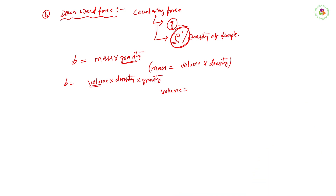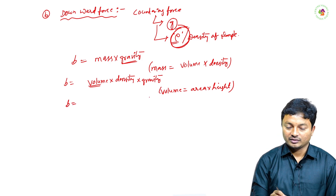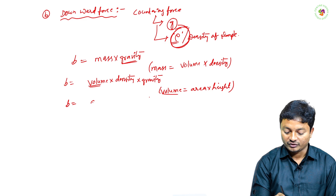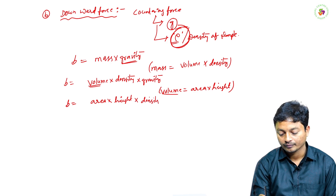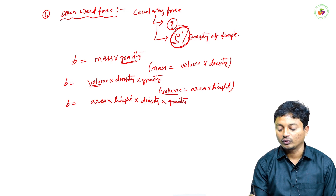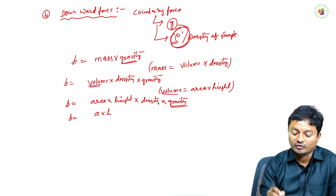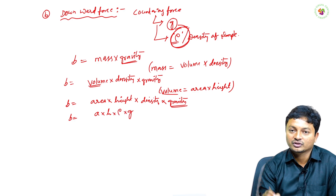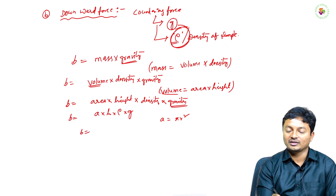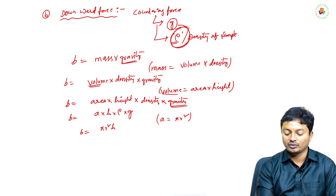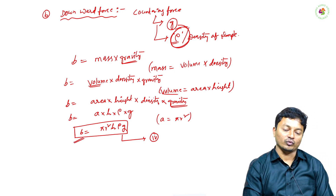The volume can be written as area times height. Substituting: the downward force equals area × height × density × g. In mathematical notation, area is written as πr², so the downward force equation becomes πr²·h·ρ·g — this is equation 4, and it represents the force acting at the downward direction.